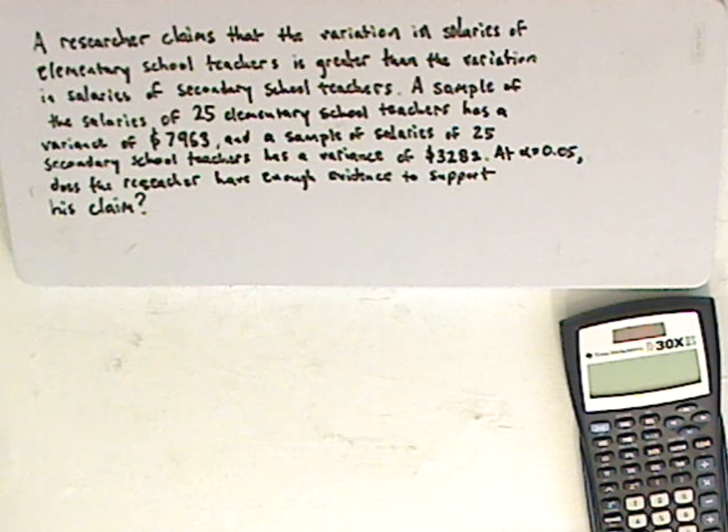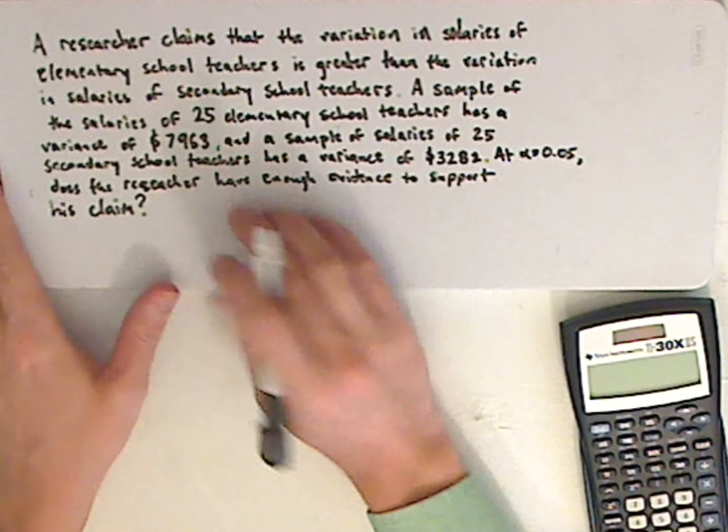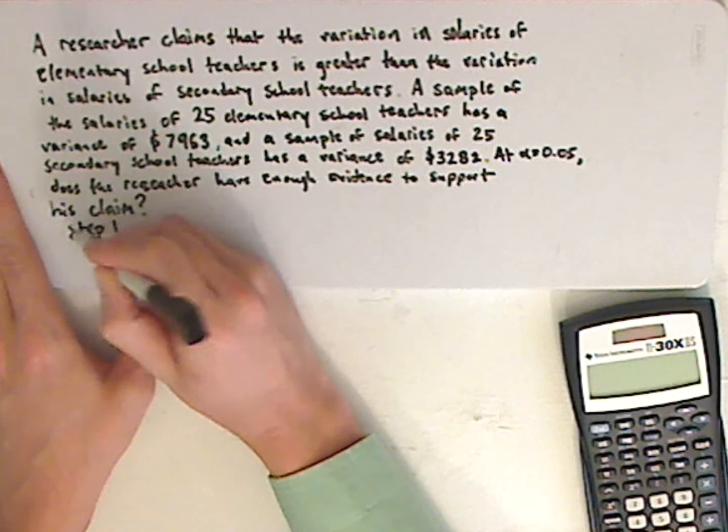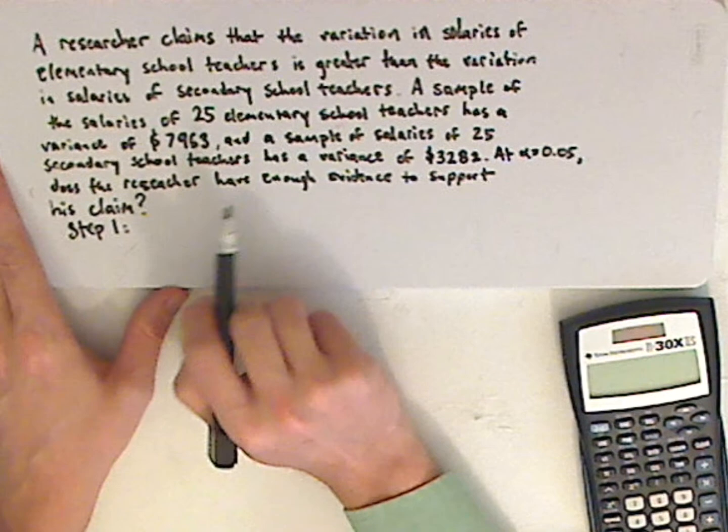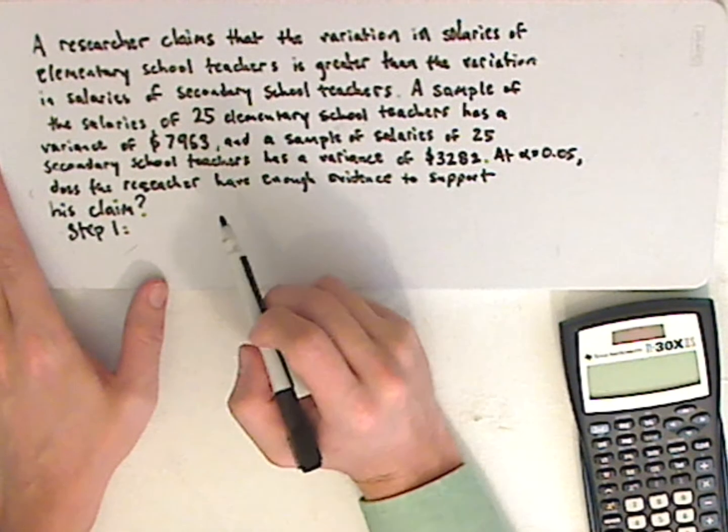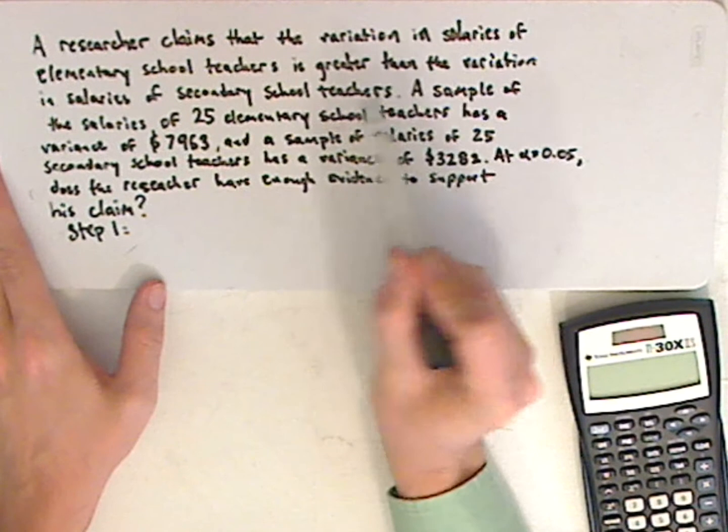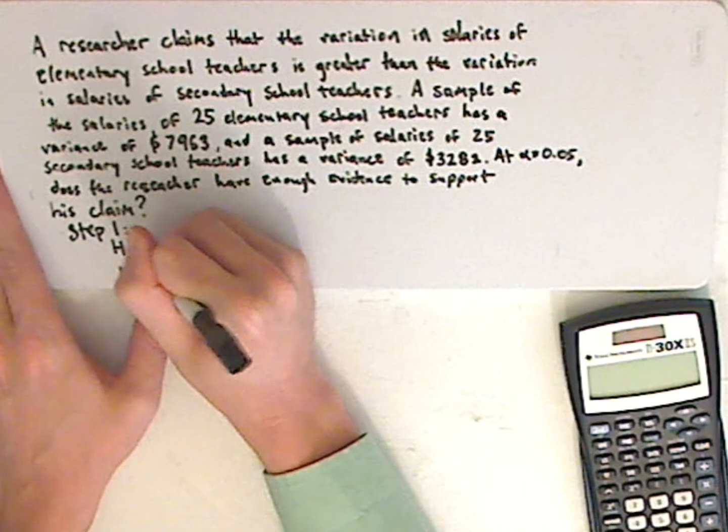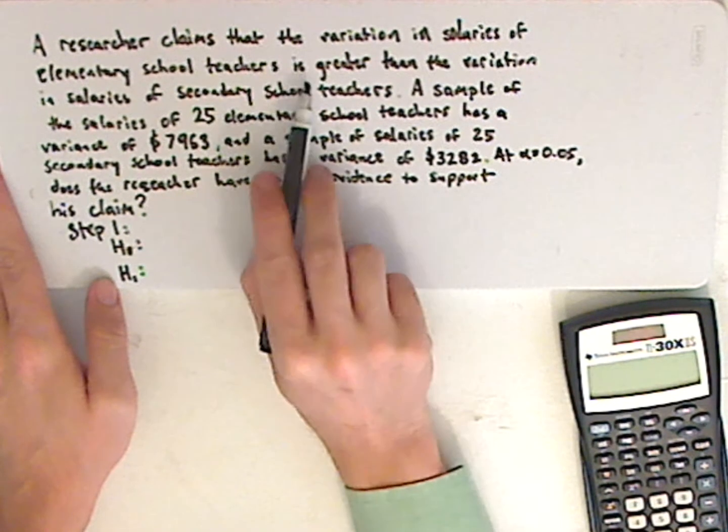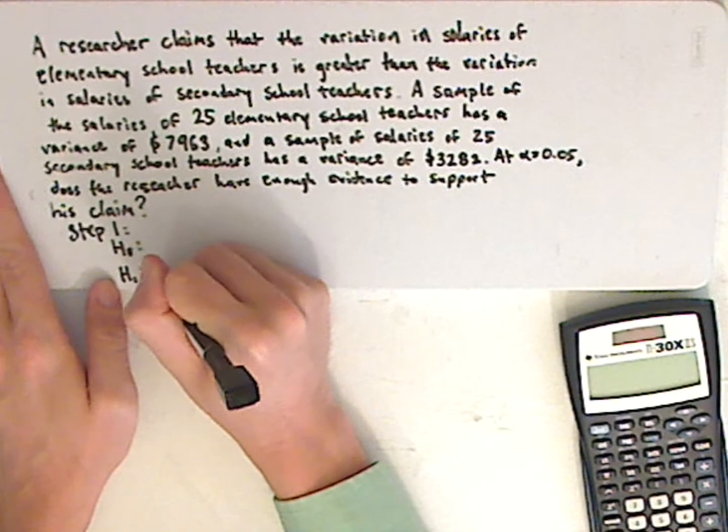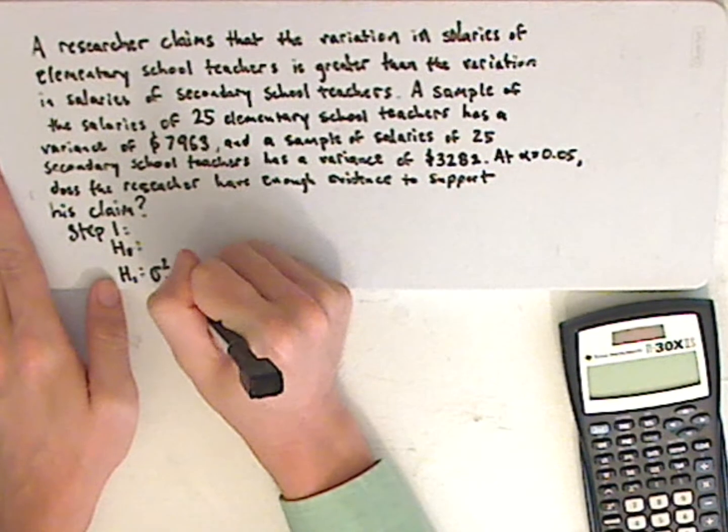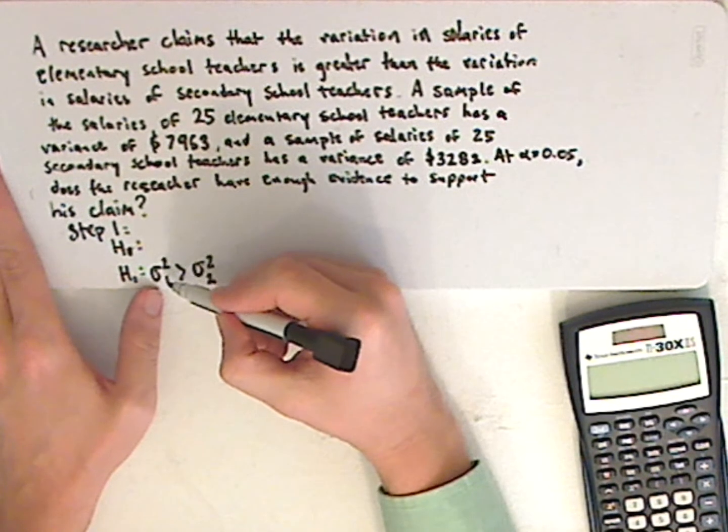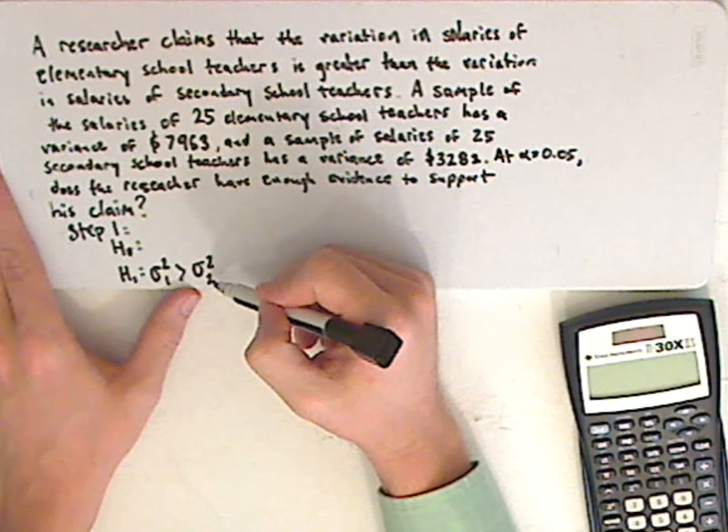Alright, first things first is you got to state your claim, you got to state your hypotheses, and also identify the claim. Now you're dealing with two variances, and variance is represented by sigma squared. And so let's just put it in order. And the claim is going to be in the alternative hypothesis, why? Because it's greater than. So it would be sigma squared 1 greater than sigma squared 2. Remember what this means? This means that it pertains to one population, and this pertains to the other population.